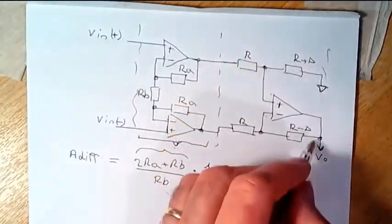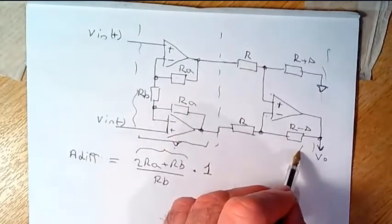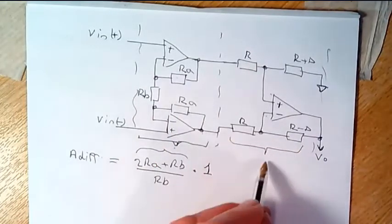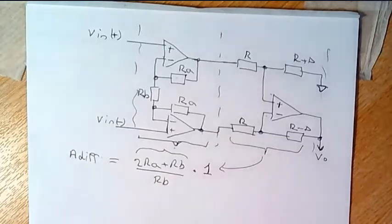and we've already proven that the gain of the second stage when it's surrounded by four equal resistors or approximately equal resistors has a gain of 1.